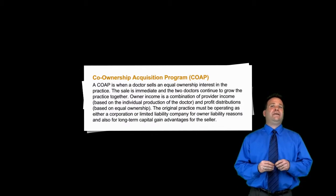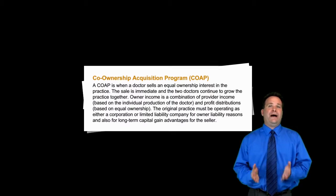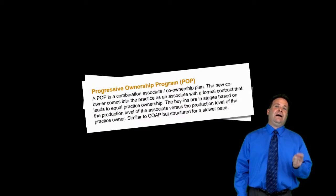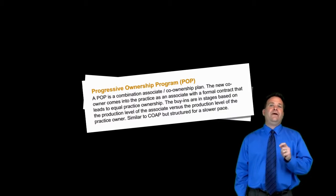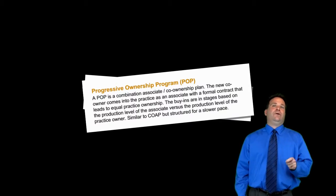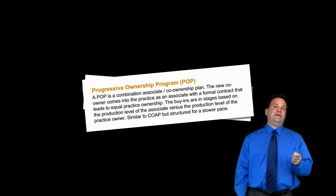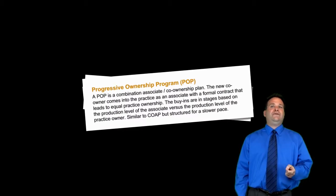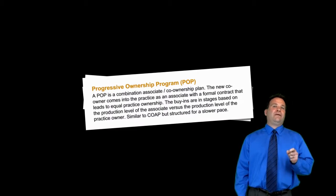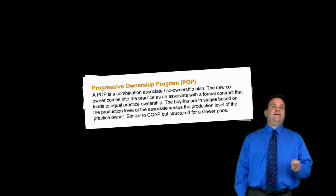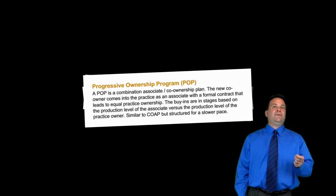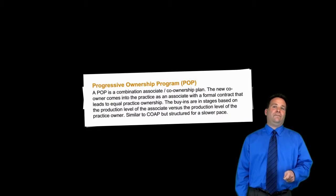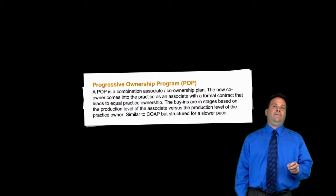Next is the progressive ownership program, or POP. A POP is a combination associate and co-ownership plan. The new co-owner comes into the practice as an associate with a formal contract that leads to equal practice ownership. The buy-ins are in stages based on the production level of the associate versus the production level of the practice owner. It's similar to a co-op but structured for a slower pace.